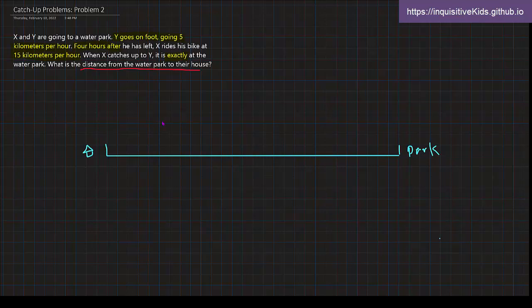So Y goes on foot going five kilometers per hour. Four hours after he has left, so this would be at four hours after he has left and how much he has walked since that four hours.